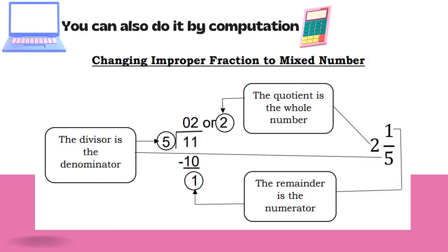Eleven-fifths is an improper fraction and two and one-fifth is a mixed number. You can also do it by computation. To change an improper fraction to a mixed number: first, divide the numerator by the denominator. If the quotient has no remainder, the answer is simply the quotient itself — use one as its denominator. If the quotient has a remainder, it can be expressed as a mixed number. So eleven-fifths, which is an improper fraction, can be written as two and one-fifth in mixed number form.